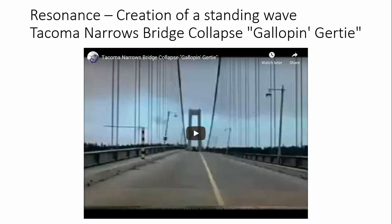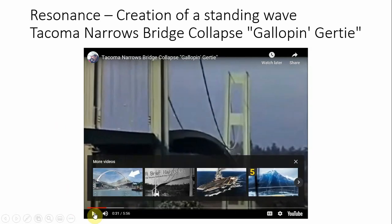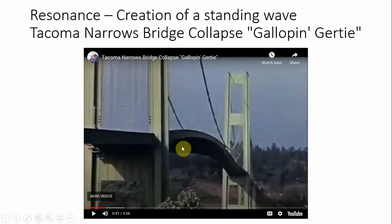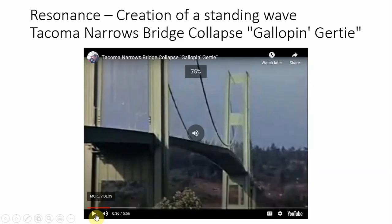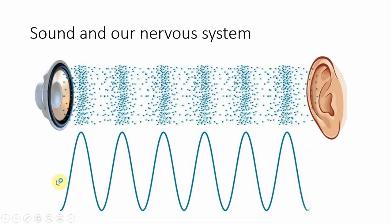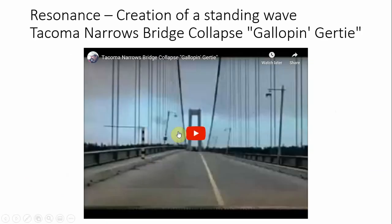The wind gusted at the natural frequency of the bridge and it ended up oscillating back and forth. When things vibrate at their natural frequency, forced vibrations at that frequency create resonance, which can increase the amplitude of the object in motion. That's what was created here on this bridge.